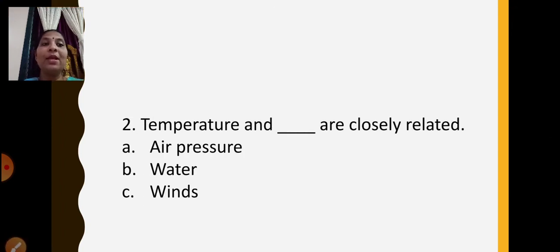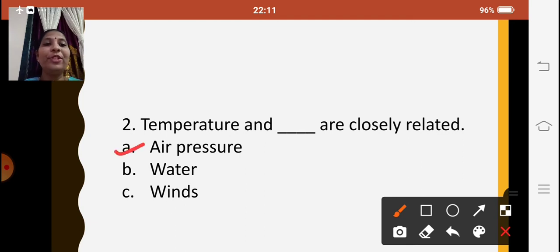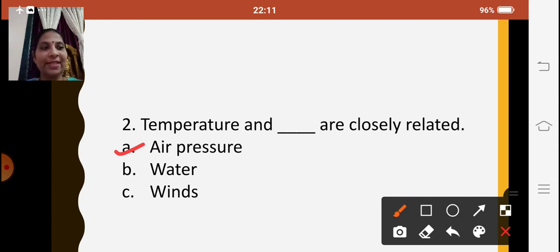One more fill in the blank: 'Temperature and blank are closely related.' Options are air pressure, water, or winds. The answer is air pressure — temperature and air pressure are closely related. When temperature is high, air pressure is low, and when temperature is low, air pressure is high. We have already learnt about this. You will be having options like this for your fill in the blanks.